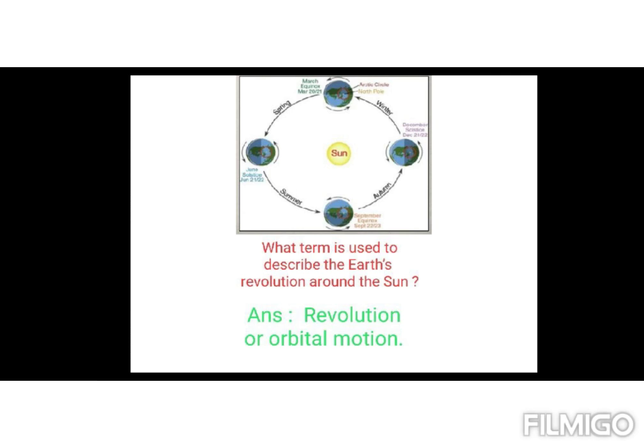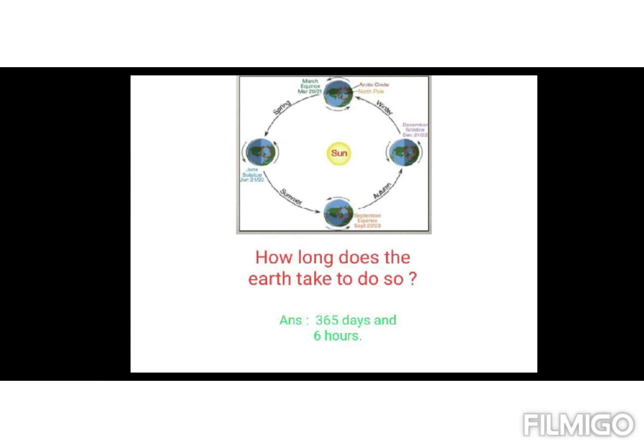The term used to describe the Earth's revolution around the Sun is revolution or orbital motion. How long does the Earth take to do so? The Earth takes 365 days and 6 hours.